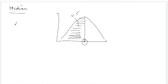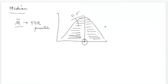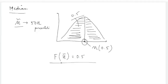The median, represented by η_0.5, is nothing but the 50th percentile, because the area to the left of it is 0.5. It identifies a point that divides the entire distribution into two halves. If you know the CDF, the median is found by solving F(x) = 0.5.